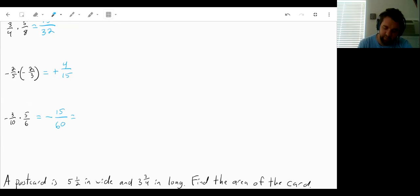Well 15 and 60 can both be divided by 3 which will get us a 5 on top and 20 on the bottom, and 5 and 20 can both be divided by 5. So that would actually give us a 1 on top and a 4 on the bottom. So our answer in this case, simplified, would be negative 1 fourth.